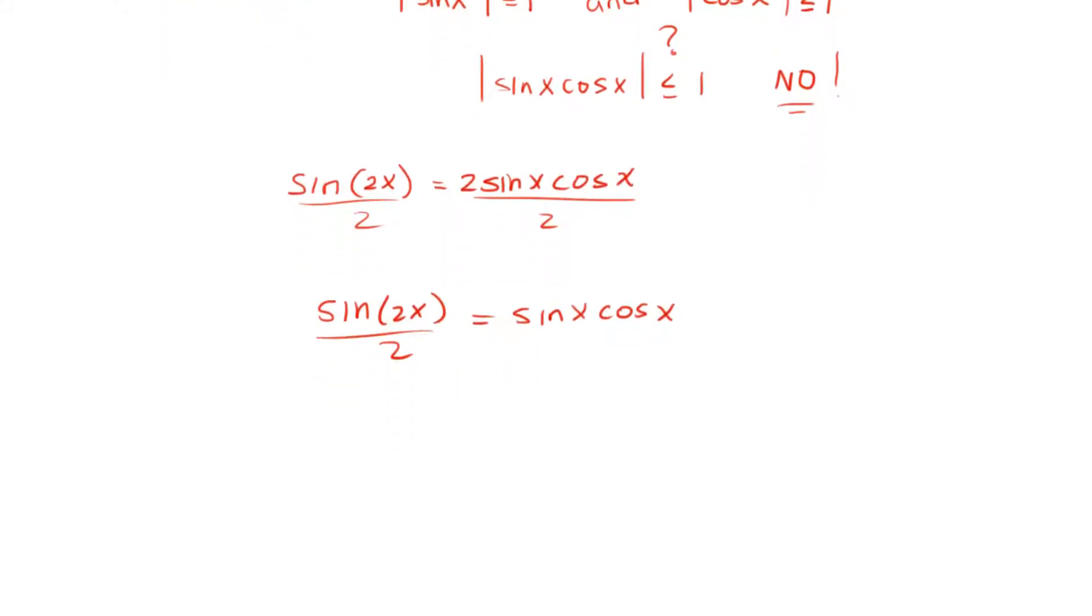Therefore, if we apply the absolute value on both sides, we get on the left side the absolute value of sine of 2x over 2, which is the absolute value of sine of 2x over the absolute value of 2, which is just 2.